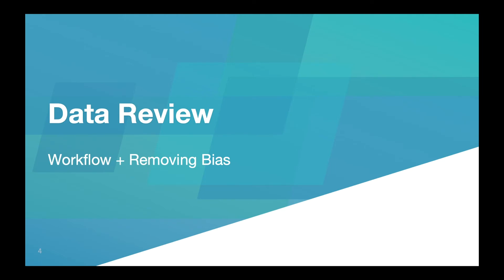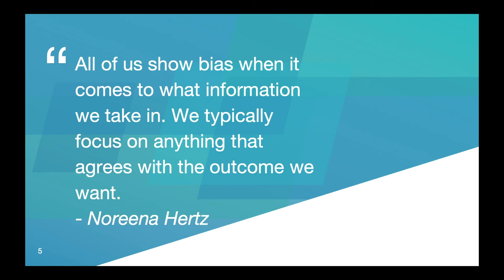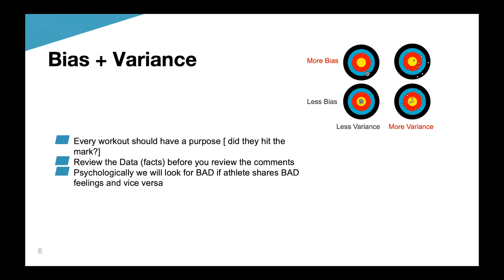Alright, so the first part of the presentation: the big thing I want you to understand is that we're first going to talk about bias. Before we even hop into talking about Training Peaks, we need to set the stage. All of us show bias when it comes to what information we take in — we typically focus on anything that agrees with the outcome that we want. We've got two things to consider: bias and variance. Think about this in terms of the grouping of intervals for a workout with an athlete.